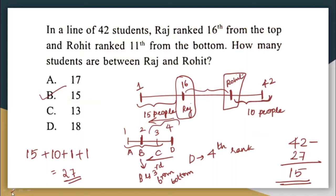I hope it is clear. Let me try to explain it to you once again. It is given in the question that Raj is 16th from the top, or there are 15 people before Raj in terms of rank. Raj is the 16th person. Similarly, Rohit is 11th from the bottom — whatever be the rank of Rohit, after Rohit's rank there are 10 people behind him in terms of rank.